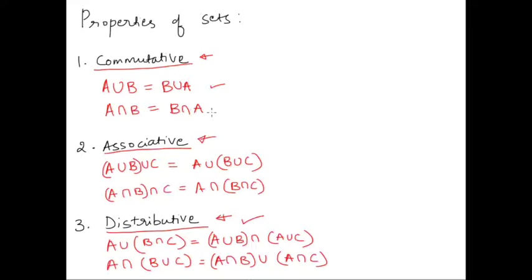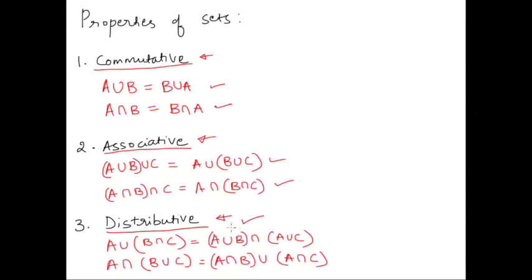In the associative property of sets, for union of sets: A union (B union C) is equal to (A union B) union C. And for intersection: A intersection (B intersection C) is equal to (A intersection B) intersection C.